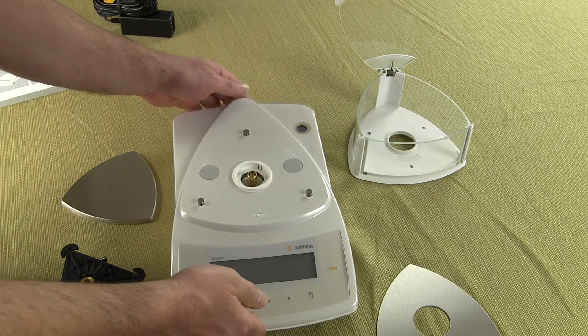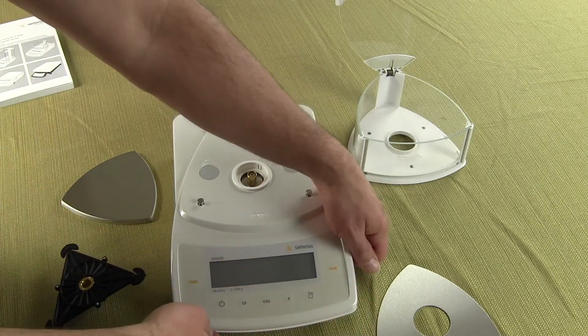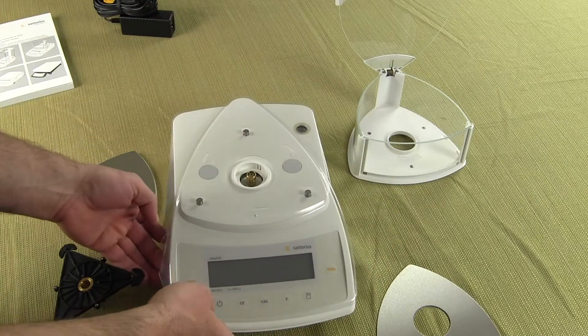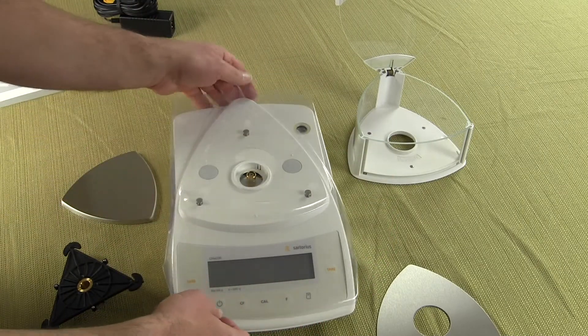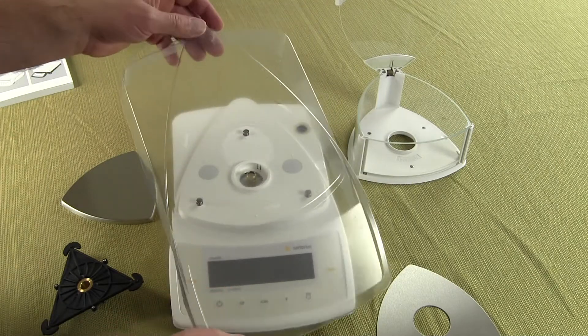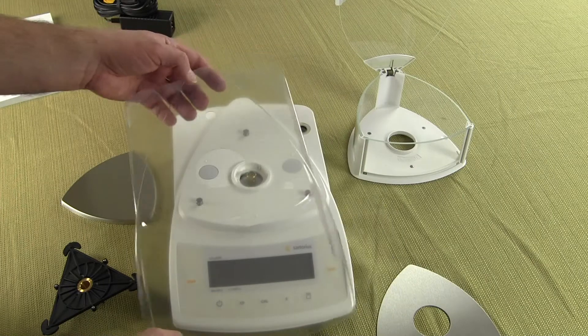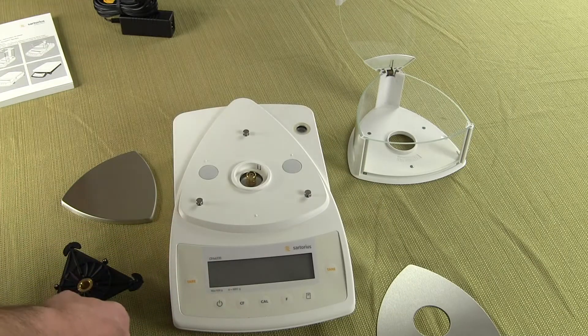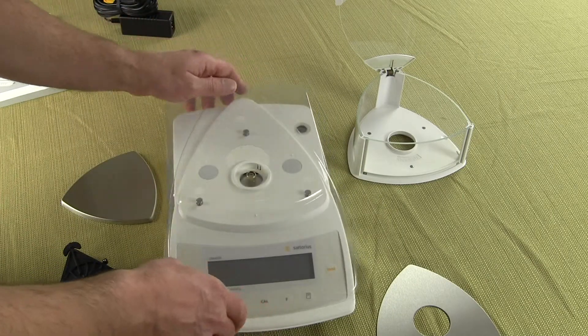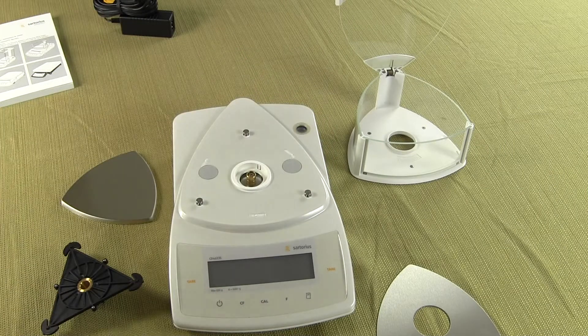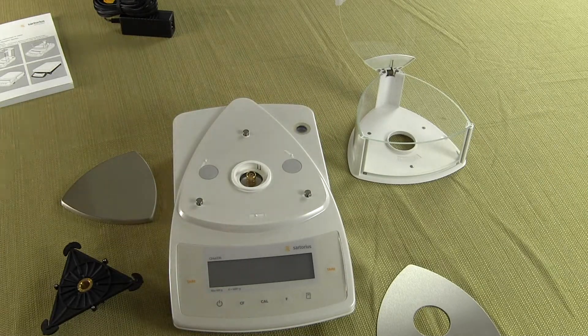The other thing you will get is one splash shield on this balance and you can buy more of these from Sartorius. So you do get one splash guard on the balance. So let's show you how to set up the balance. There's your splash shield and the first thing you want to do is power up your balance.